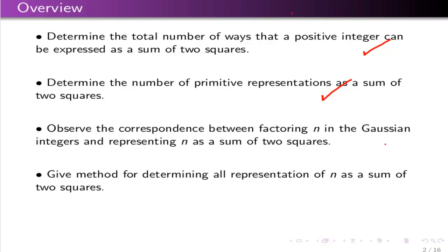In the process, we're going to observe a nice correspondence between expressing an integer as a sum of two squares and factoring a Gaussian integer in a particular way. And finally, we want to show how what we're doing here actually gives you an algorithm for constructing all of the different representations of a number as a sum of two squares.